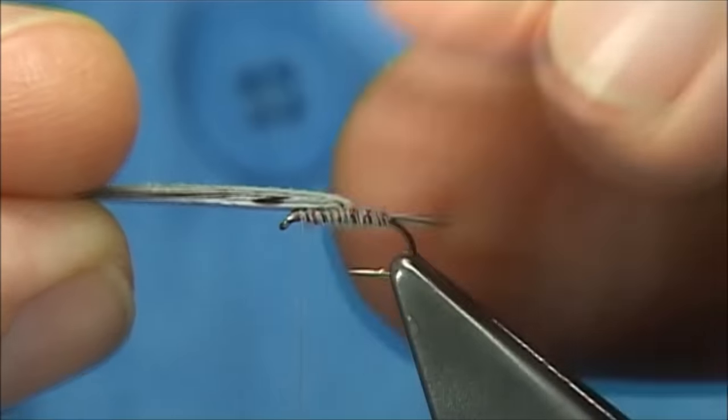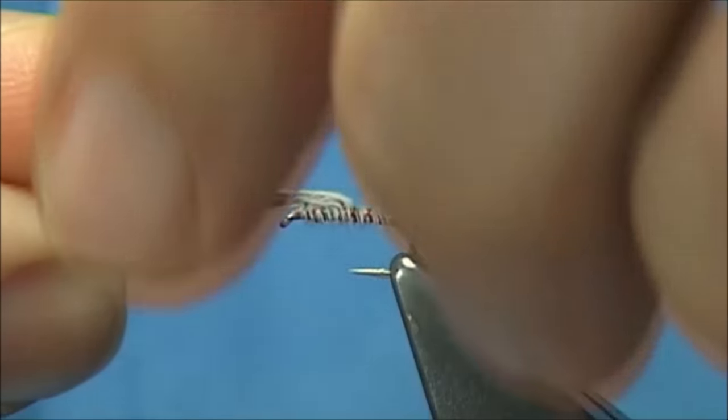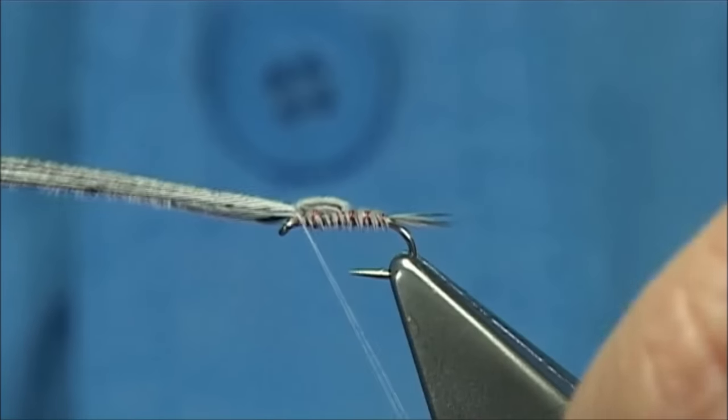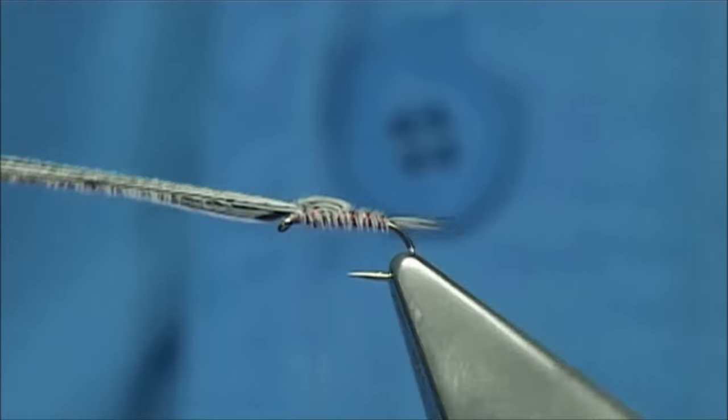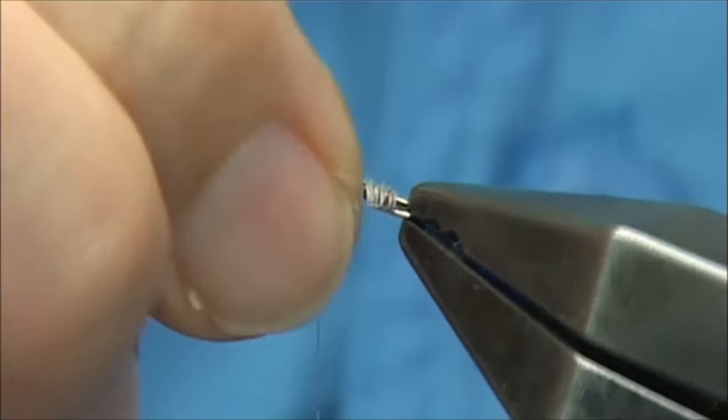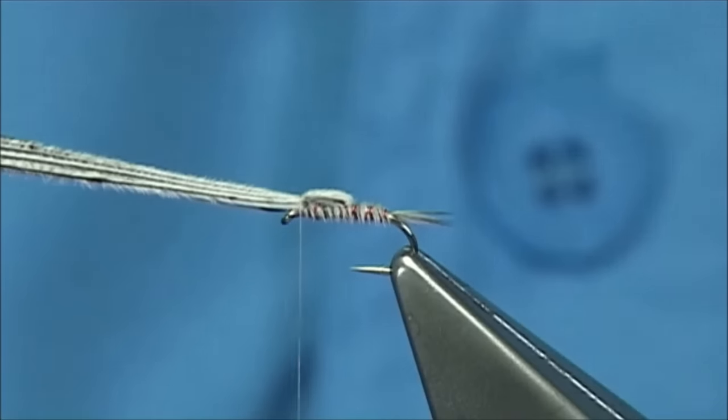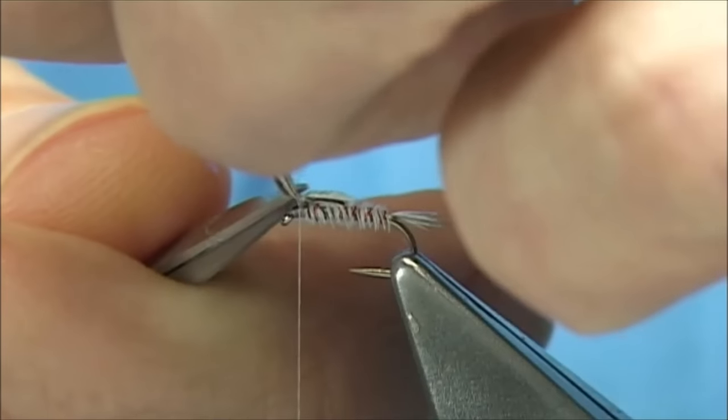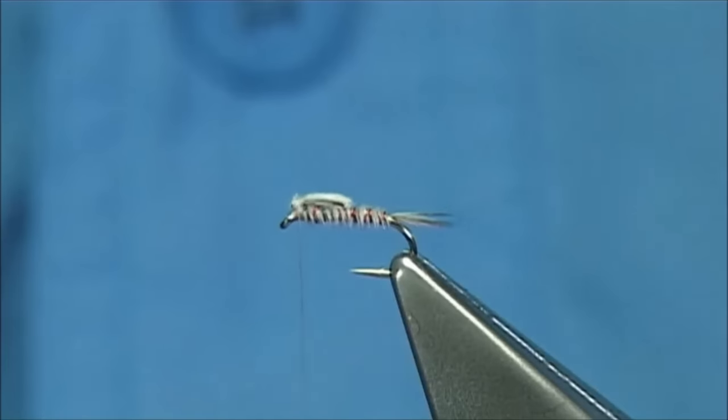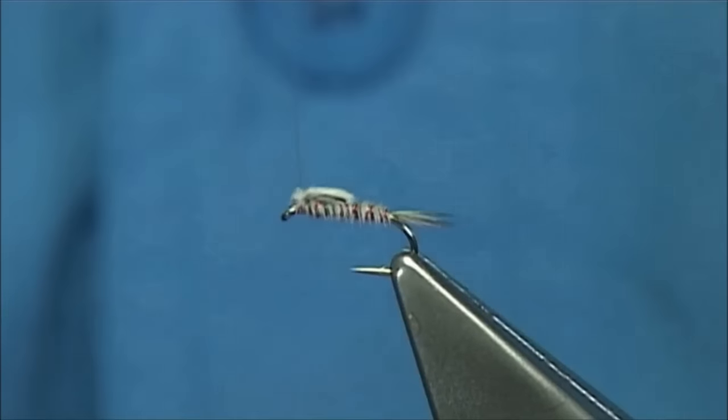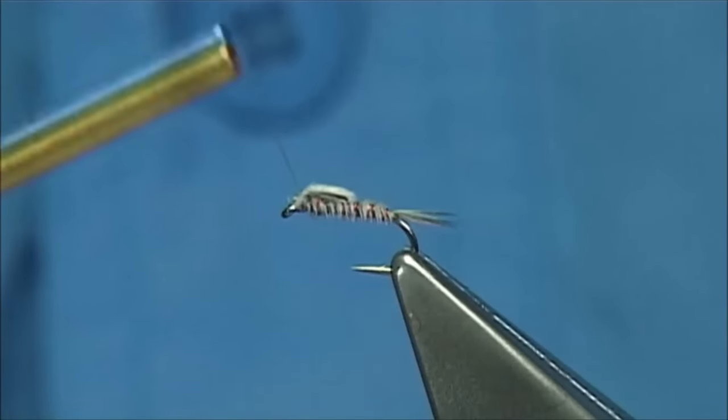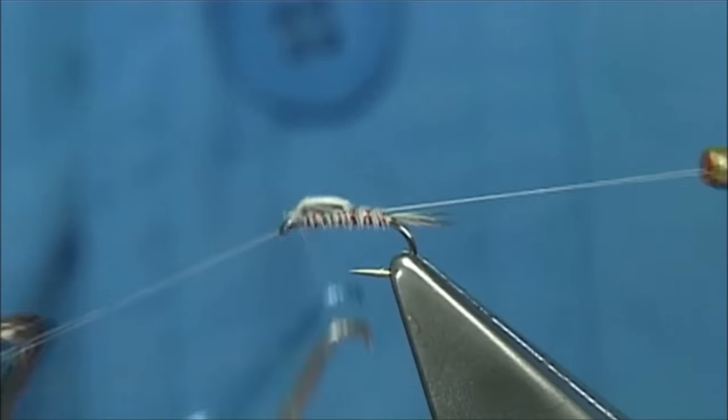Then we can fold over the turkey for our thorax cover. A couple of turns now, just at this point, see the shape that you want. Make sure it's slightly spread. If you're happy with that, come in and trim away the excess. A bit of wax on my thread. Just make sure you have plenty of grip. Form a nice head. Whip finish.